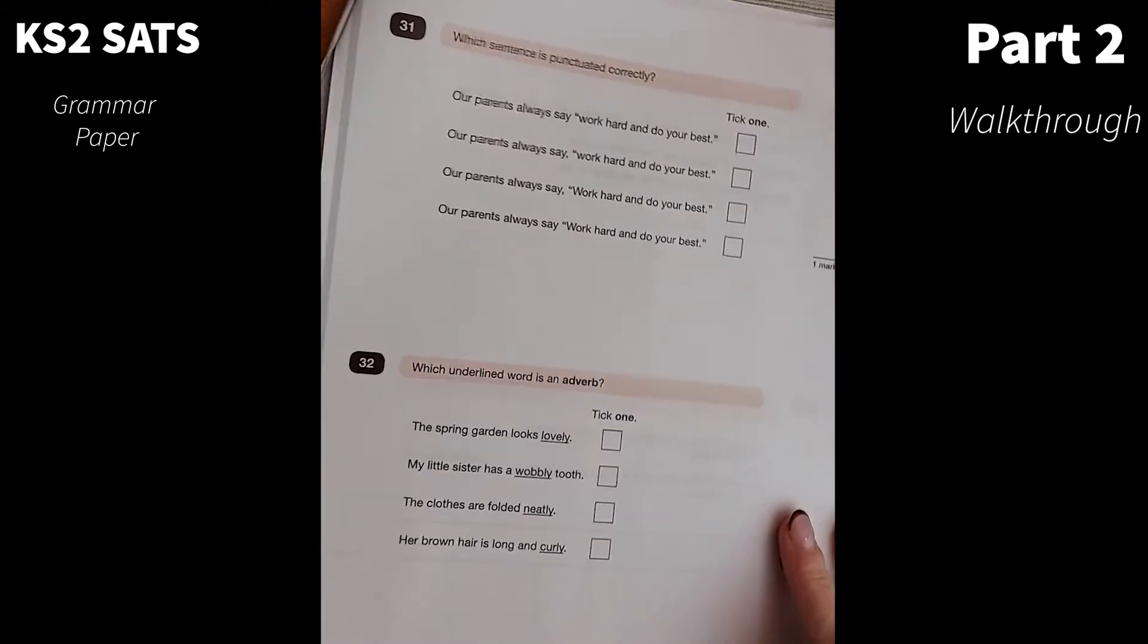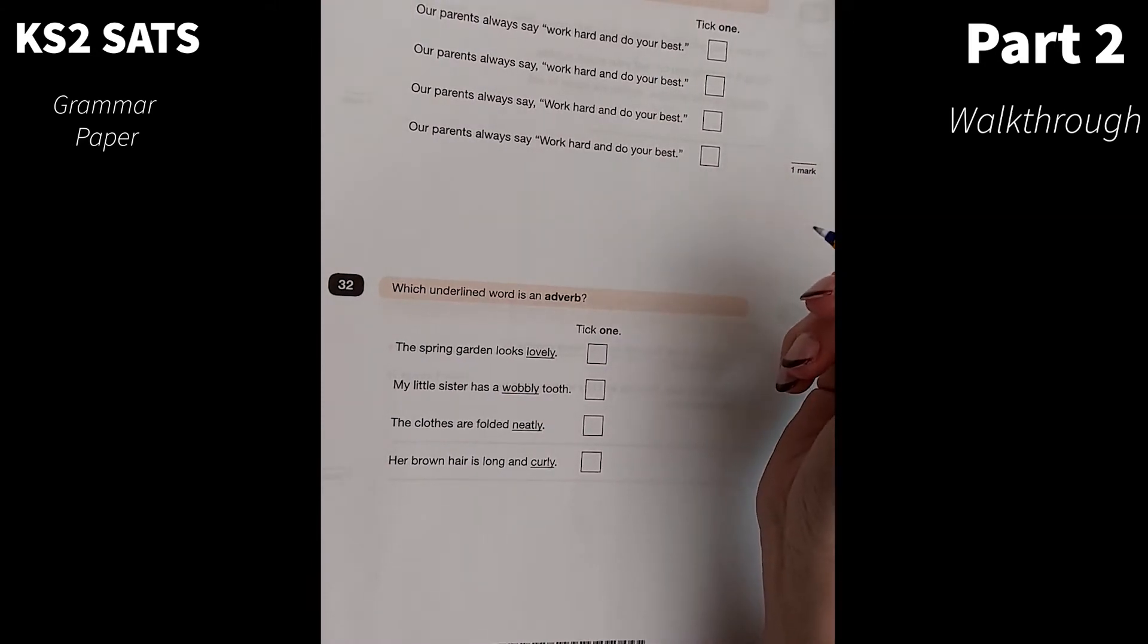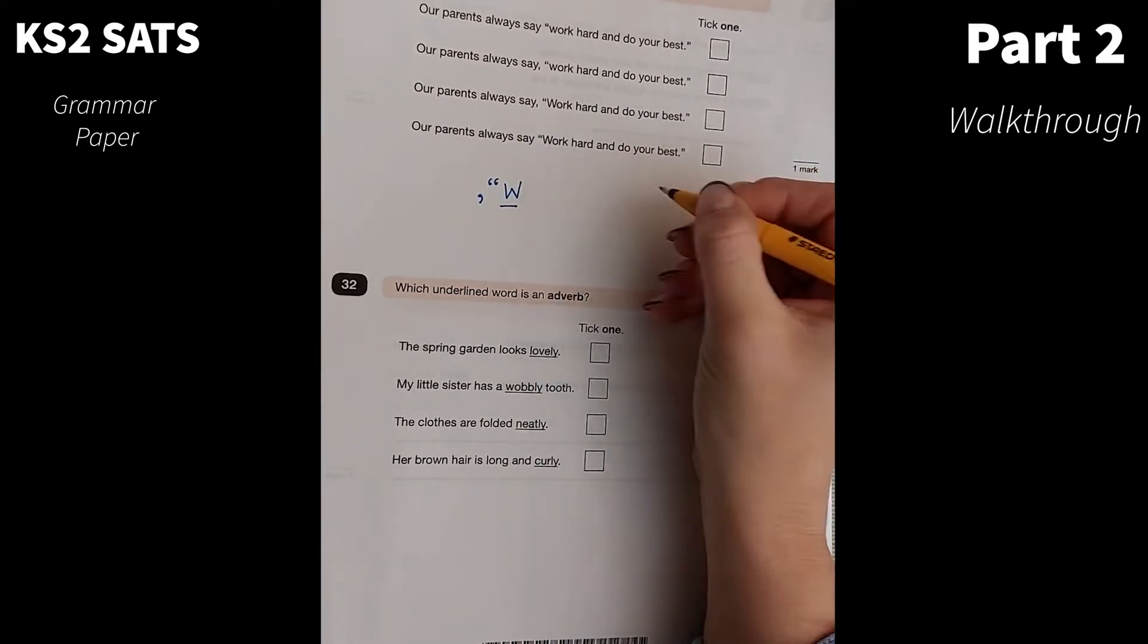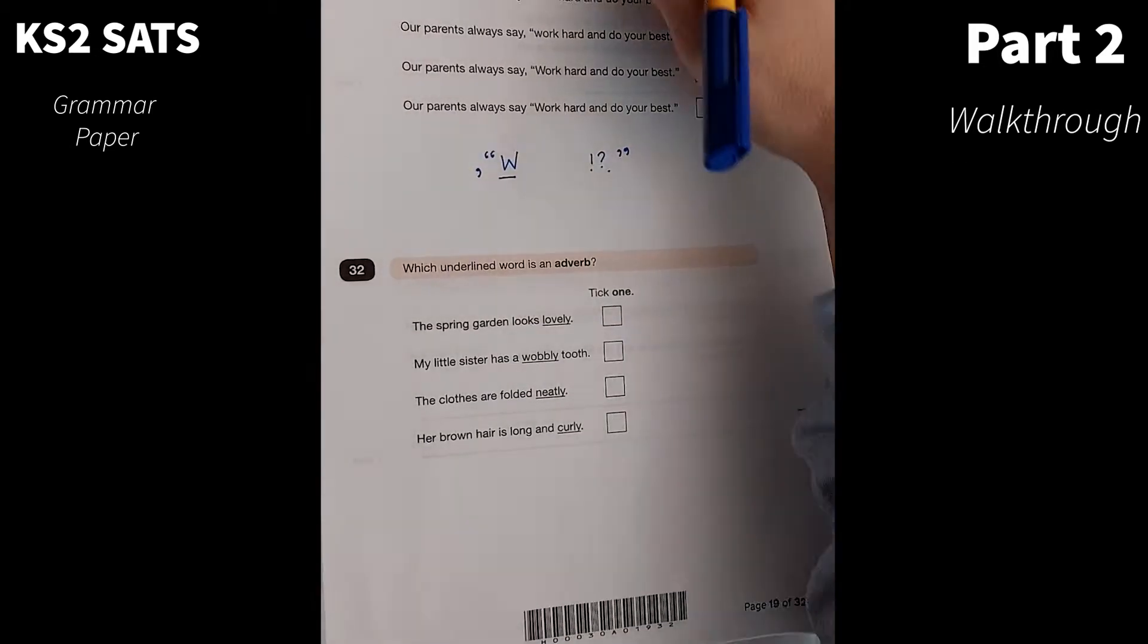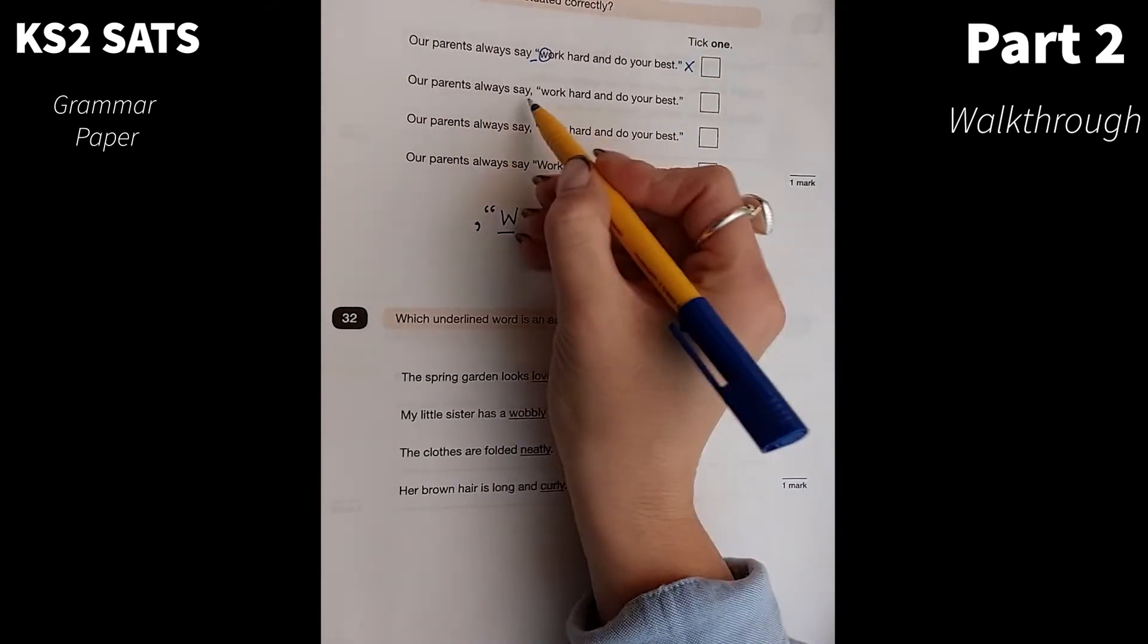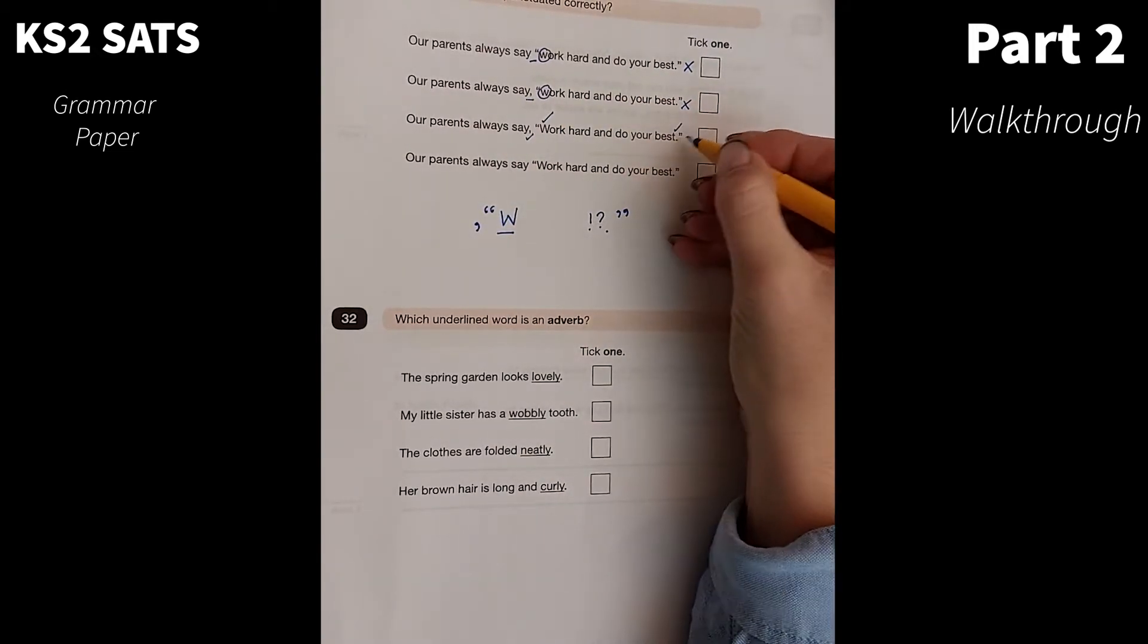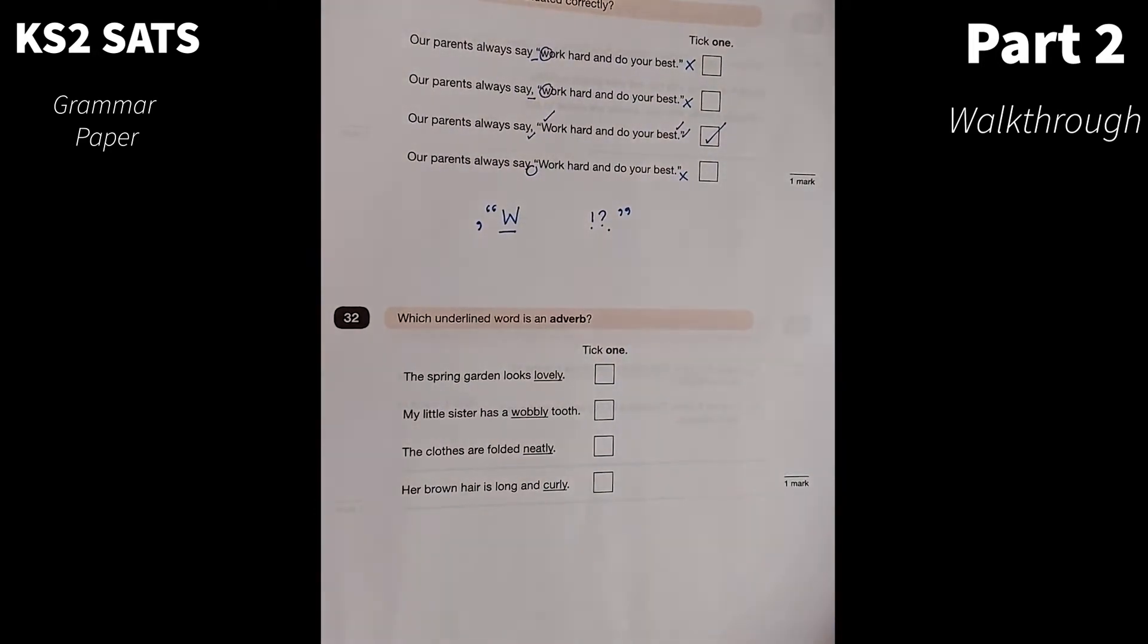Number 31. Which sentence is punctuated correctly? Here we've got direct speech using inverted commas to punctuate speech. The rules for working with inverted commas for direct speech are we need a comma before the speech begins. We need a 66. Our first letter of the speech needs to start with a capital letter. And then we need punctuation before the 99. Let's see which of these are correct. Our parents always say, well, I can't see a comma there and that's not a capital. This one does have a comma, but speech doesn't begin with a capital letter. Our parents always say, well, I've got my comma, I've got my capital, I've got my punctuation, and then I've got my 99. So I think that one is definitely going to be correct.